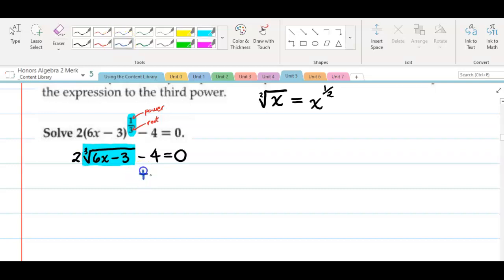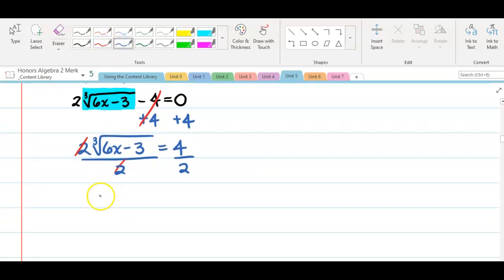So let's start off just like we were before. We're going to isolate the radical. Even though it's not a square root, it's a cube root. It's still a radical. To do that, we're going to add 4 to both sides. And then, we're going to divide by 2. So we're left with the cube root of 6x minus 3 equals 2. How do we undo a cube root? We raise it to the third power. Both sides. Here, the cube and the cube root cancel out.